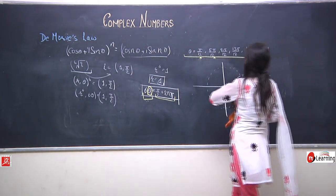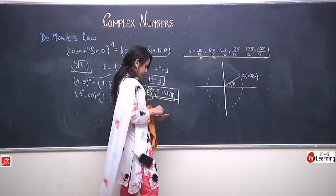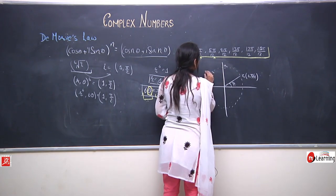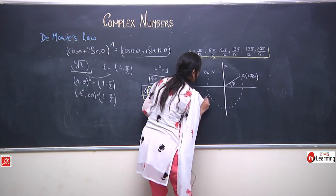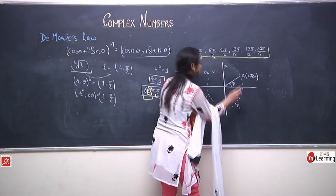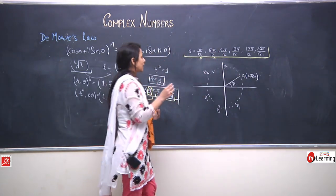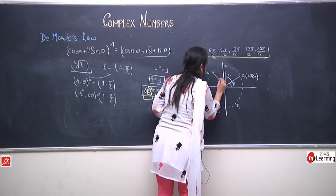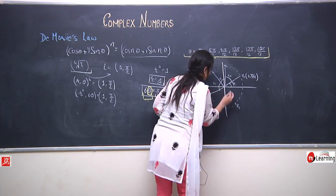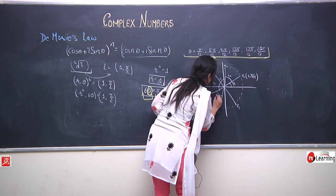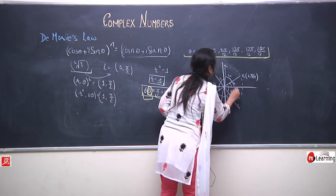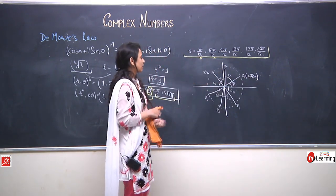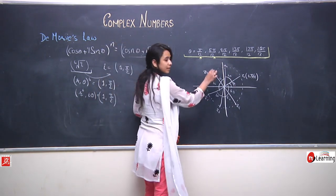Similarly, we can plot all other values. When we plot z1, z2, z3, z4, z5, and z6, we see that all 6 roots divide this circle into 6 equal parts, with 60 degrees between each consecutive root. All of them have modulus equal to 1.